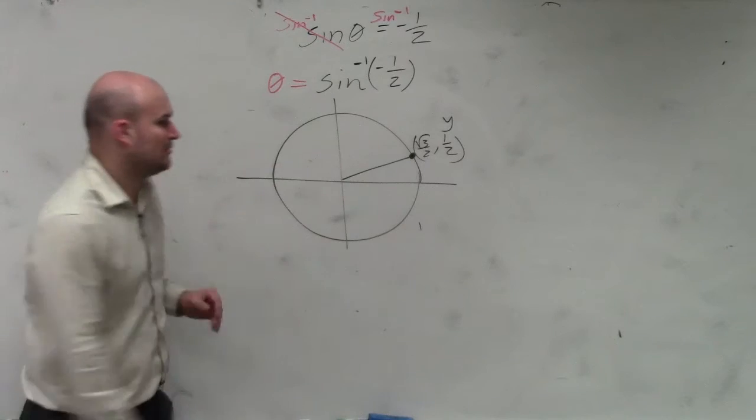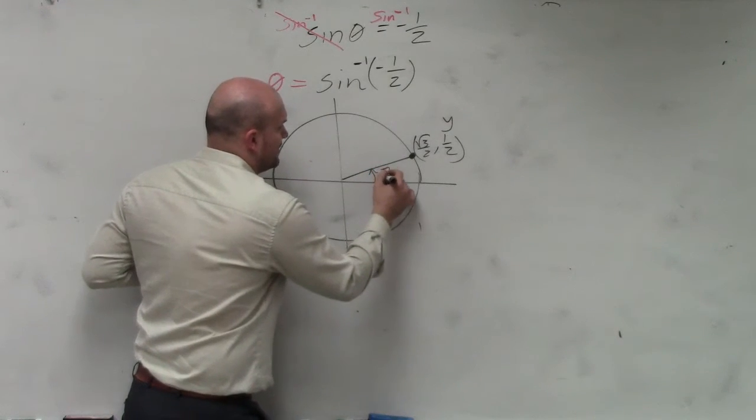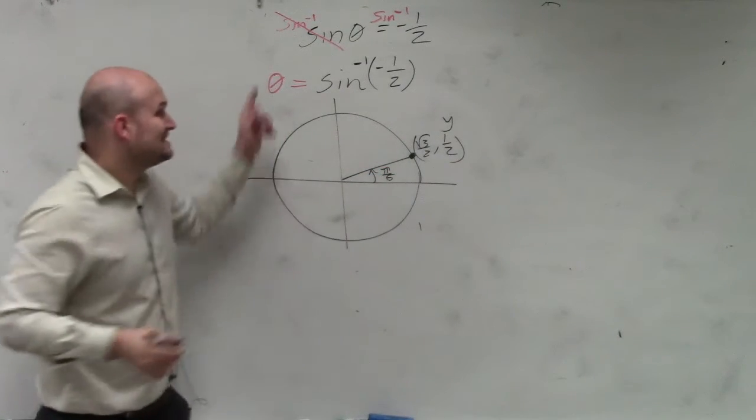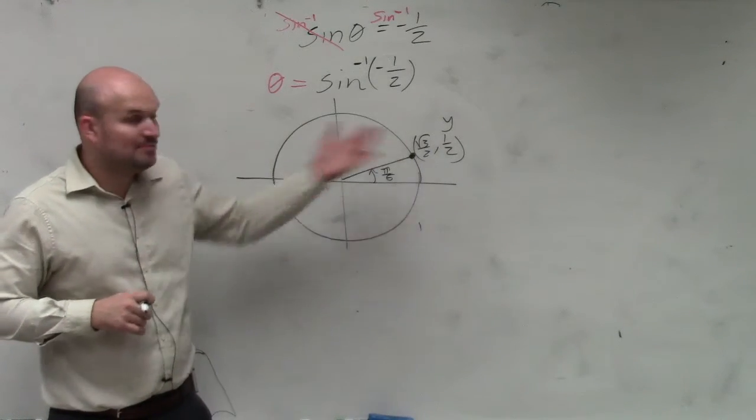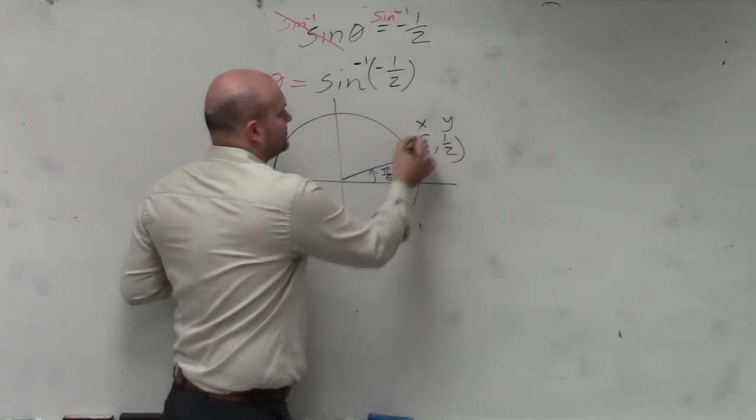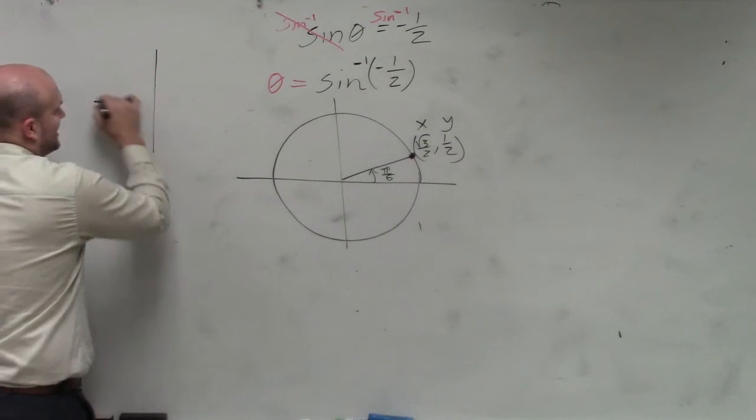Ladies and gentlemen, if you have a coordinate point, we know this angle is pi over 6. That is not the angle that produces sine equal to negative 1 half. That gives you positive 1 half, right? Now, let's go back and kind of have an understanding of reflections.